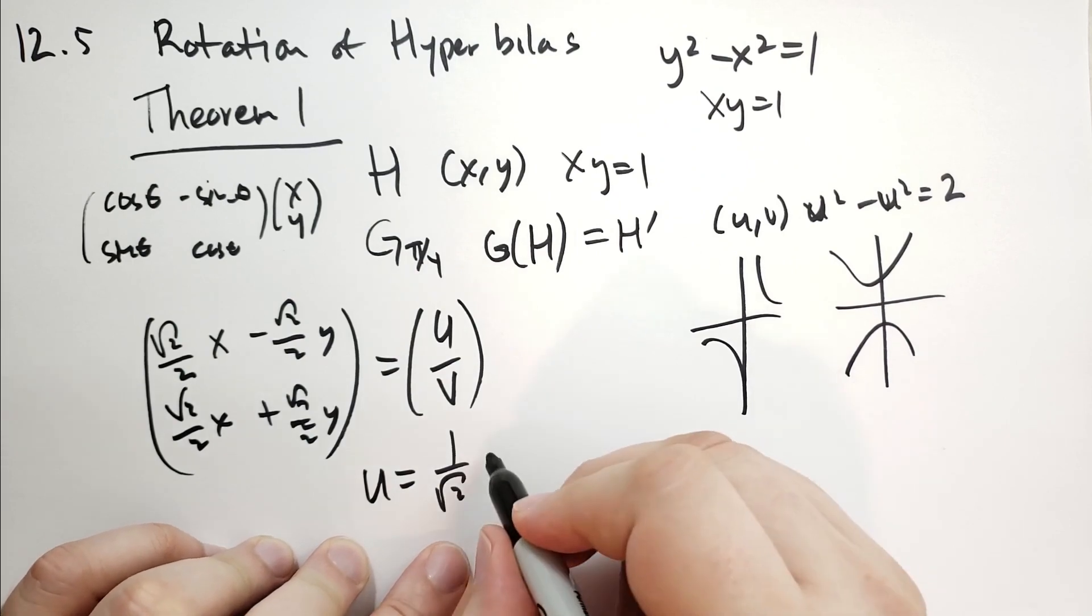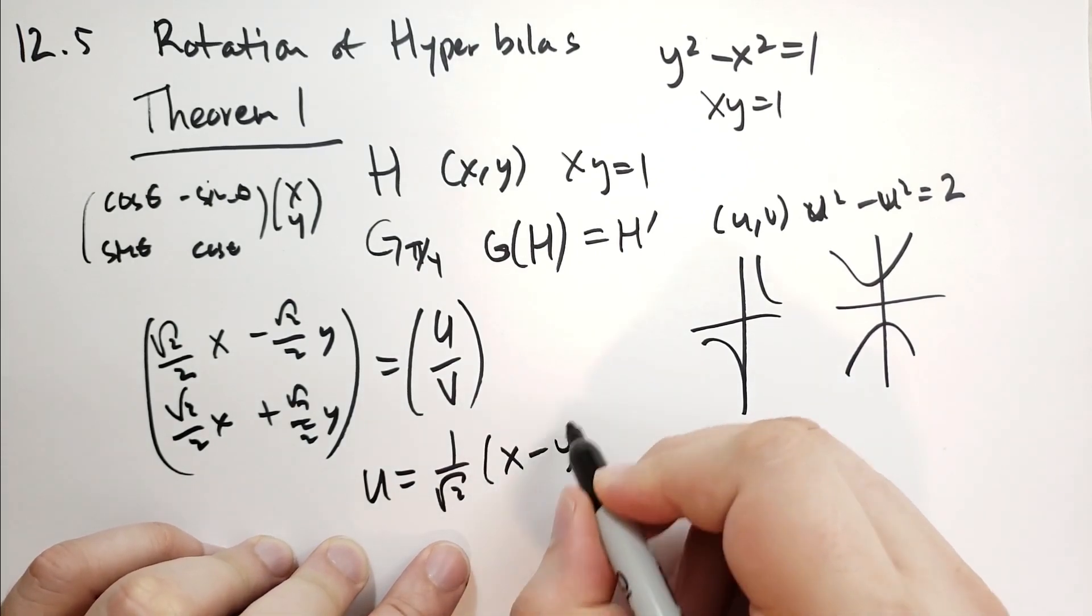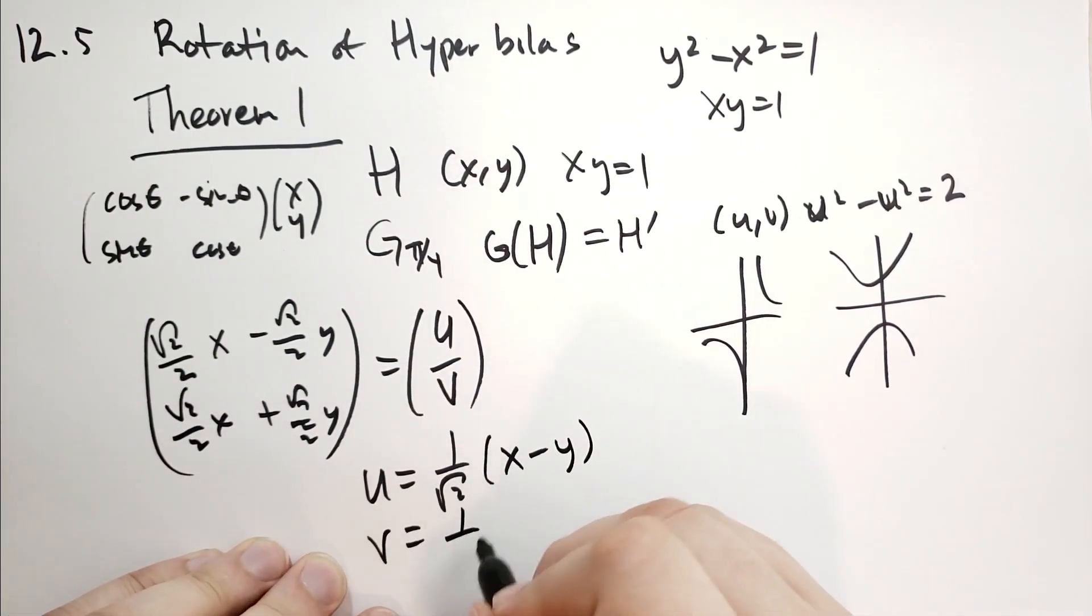1 over root of 2, x minus y, and v is equal to 1 over root of 2, x plus y.